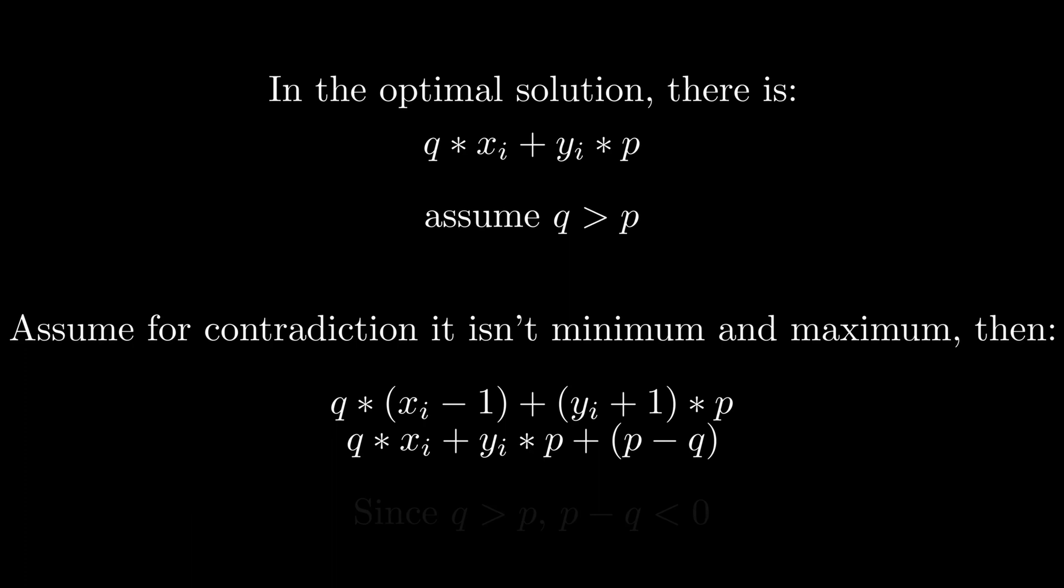Now, this expression increased by p minus q, but because p is smaller than q, because q is larger than p, this means that p minus q is negative, hence it decreased. But wait, we assumed the previous one was optimal, so there's a contradiction, we have even a smaller expression. So that is a contradiction, meaning that xi is the minimum and yi is the maximum.